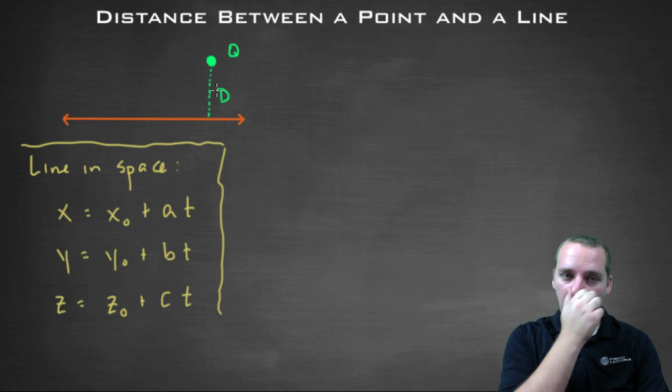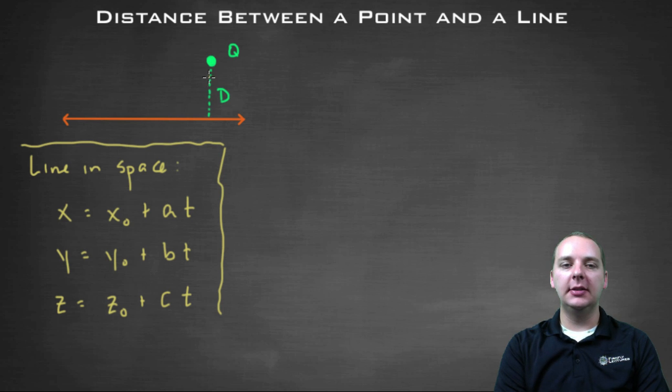to that three-dimensional line? How would you find that shortest distance there? It's not quite as straightforward as you might think, because we don't know the point on the line that's closest to Q. So you can't just do a quick little distance formula and be done with it. It's a little bit more involved than that.